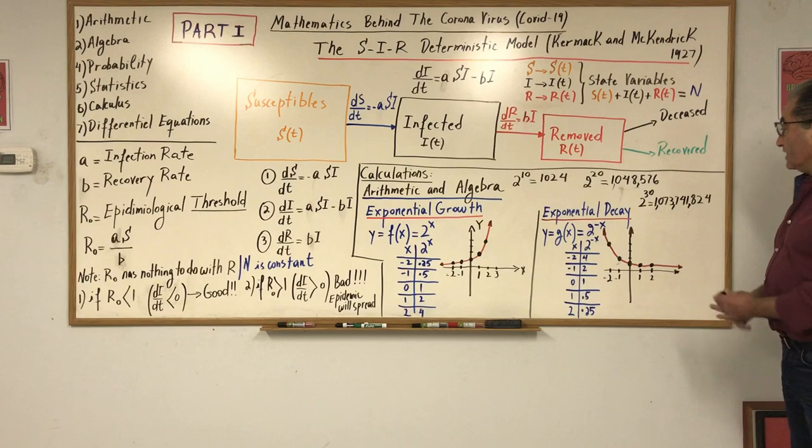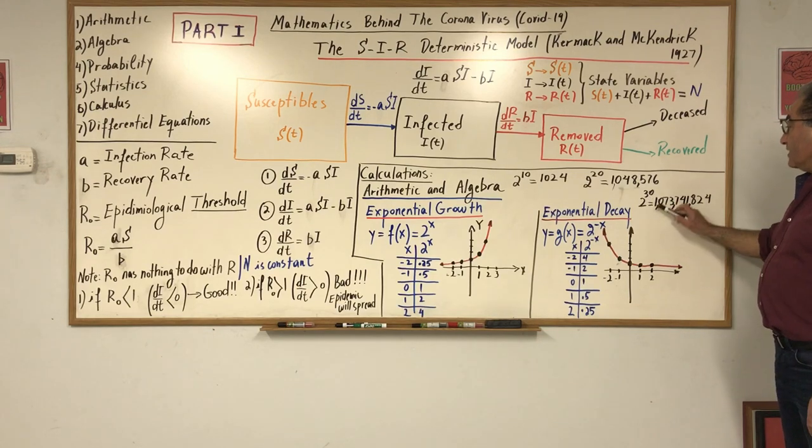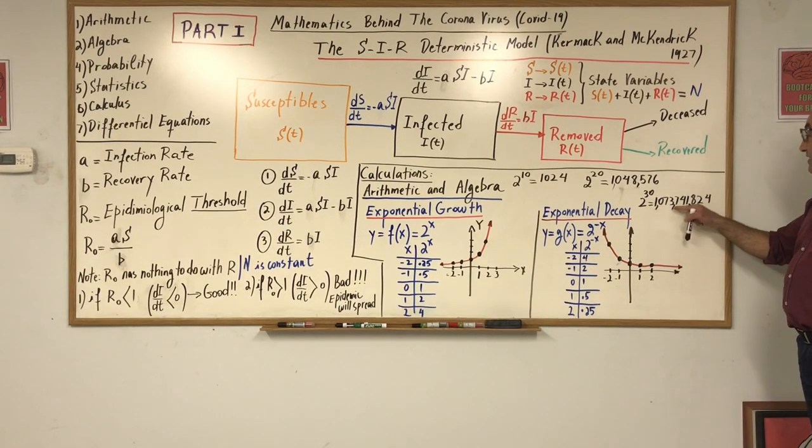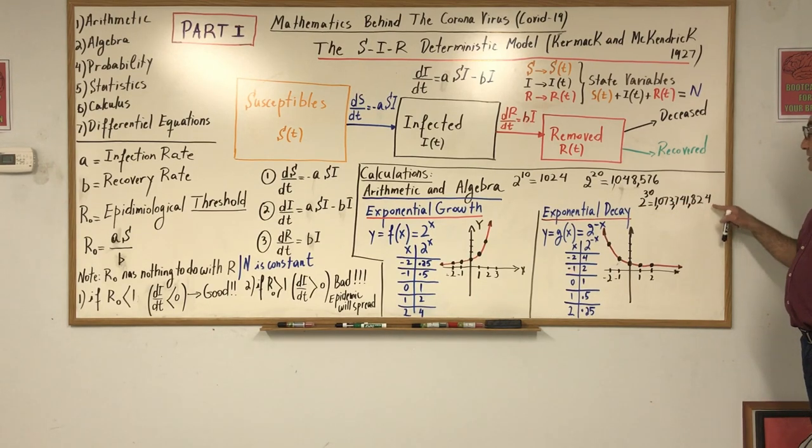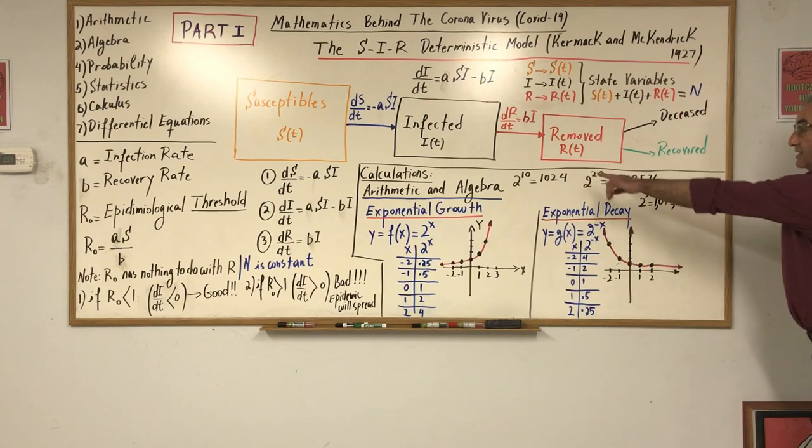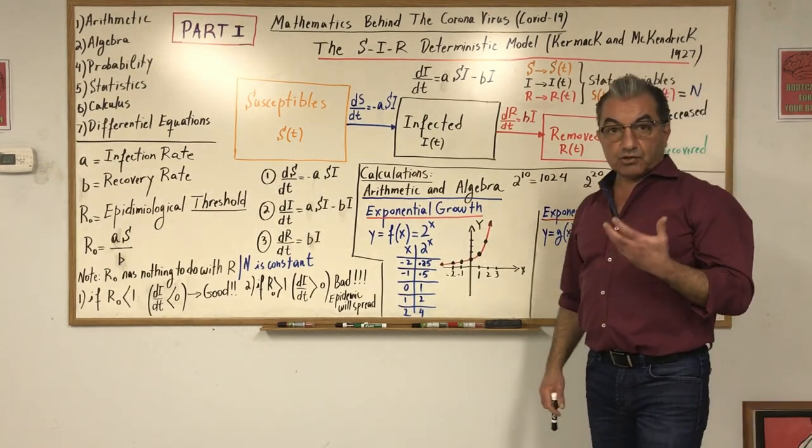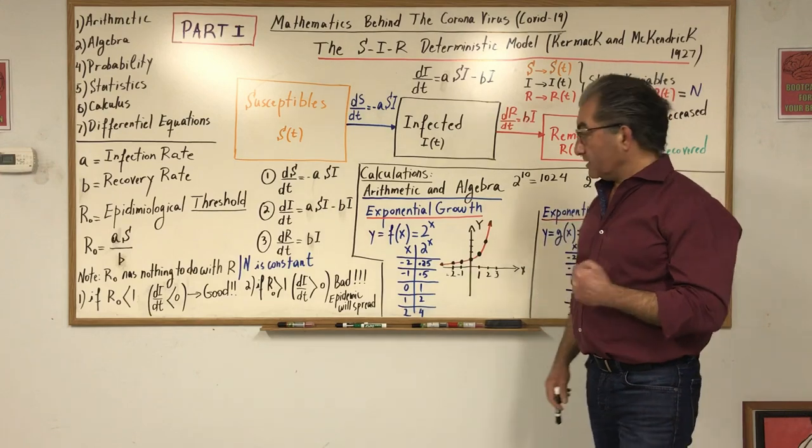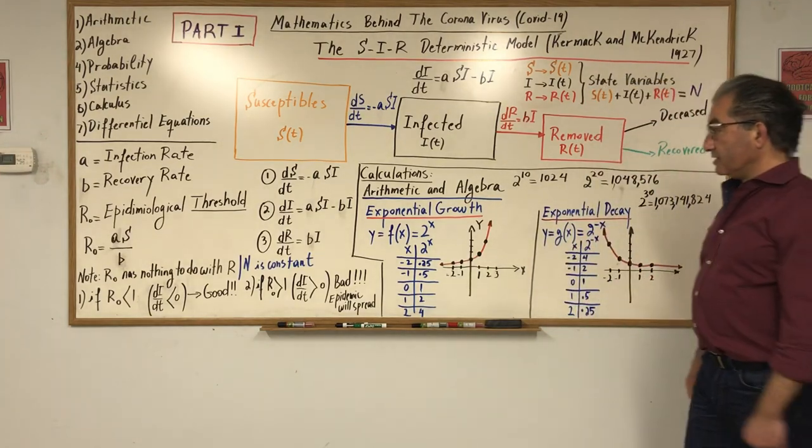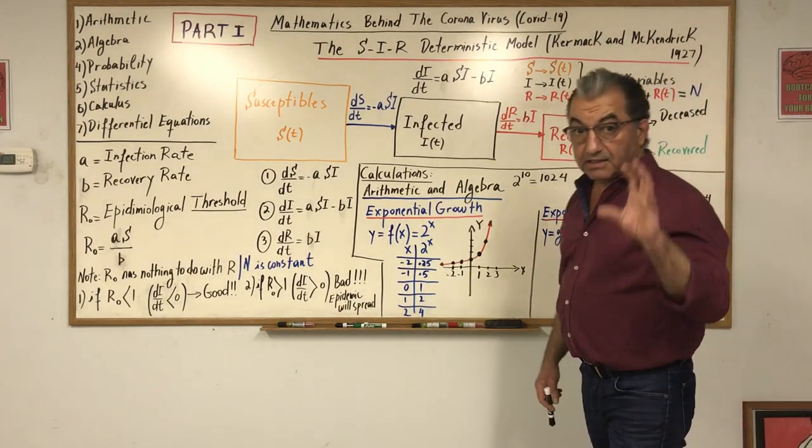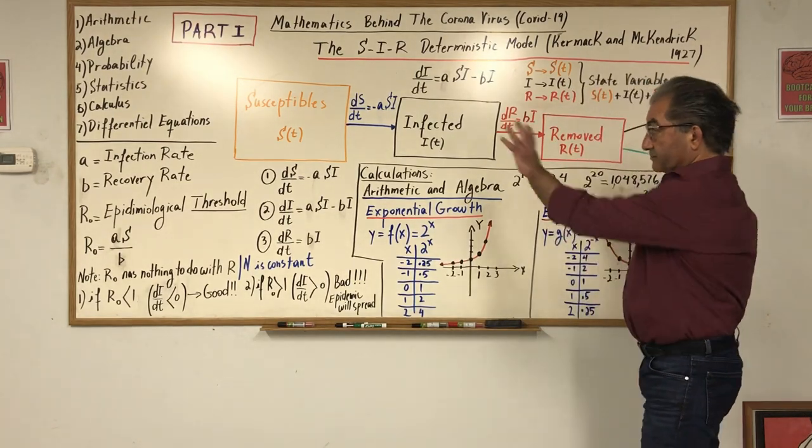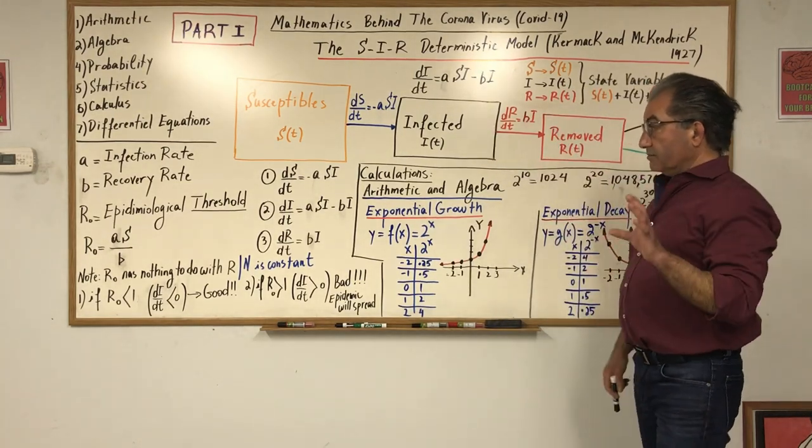If you put 30, it's one billion seventy-three million seven hundred forty-one thousand eight hundred twenty-four. So you see how the numbers jump. When something grows exponentially, it's pretty... well in this case it could be pretty dangerous. It's not working the same way for coronavirus, and there are ways to prevent that.